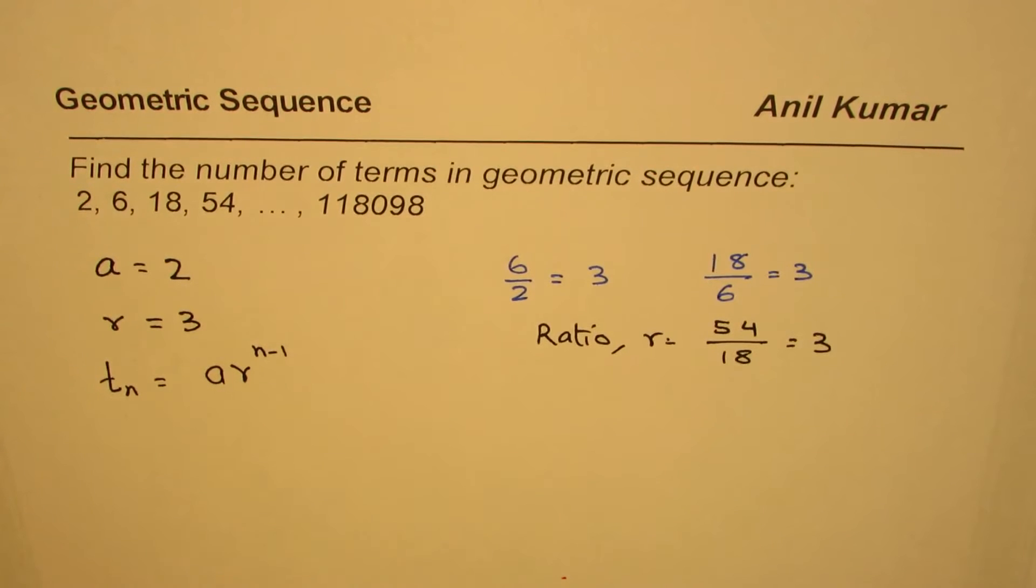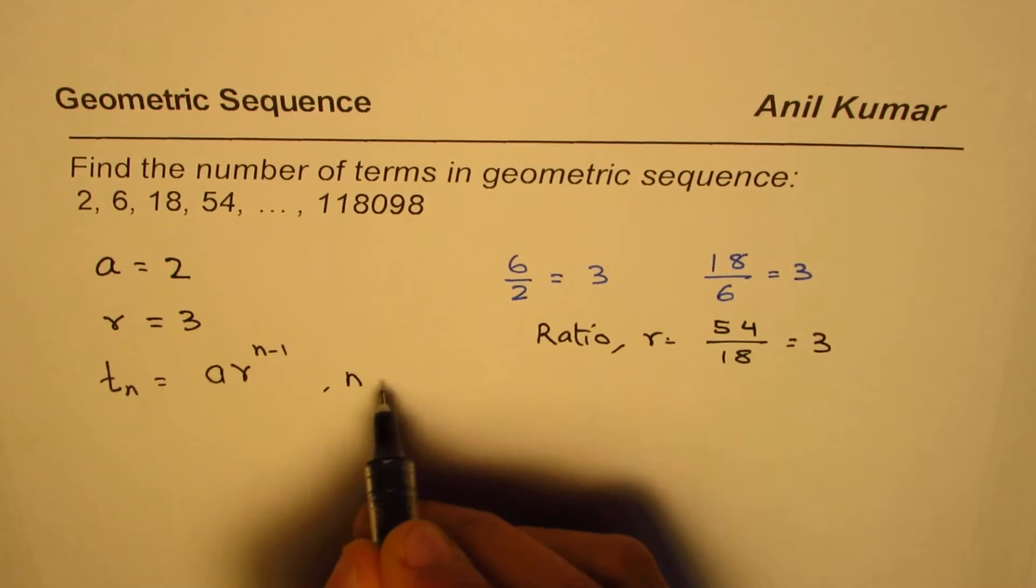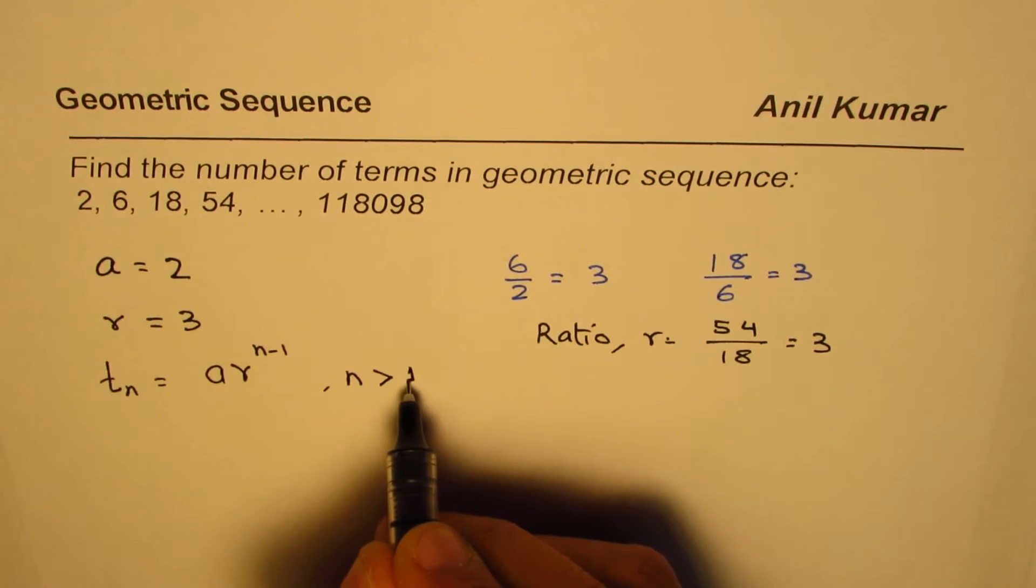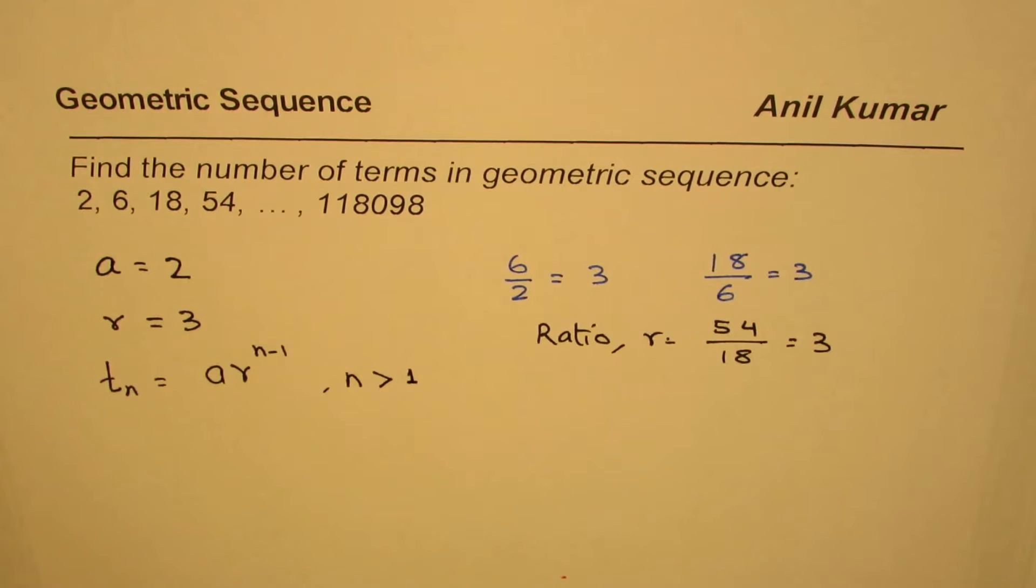So where the value of n has to be greater than 1. You start with the second term, you cannot put 0 here, that's a restriction. So that is the nth term.